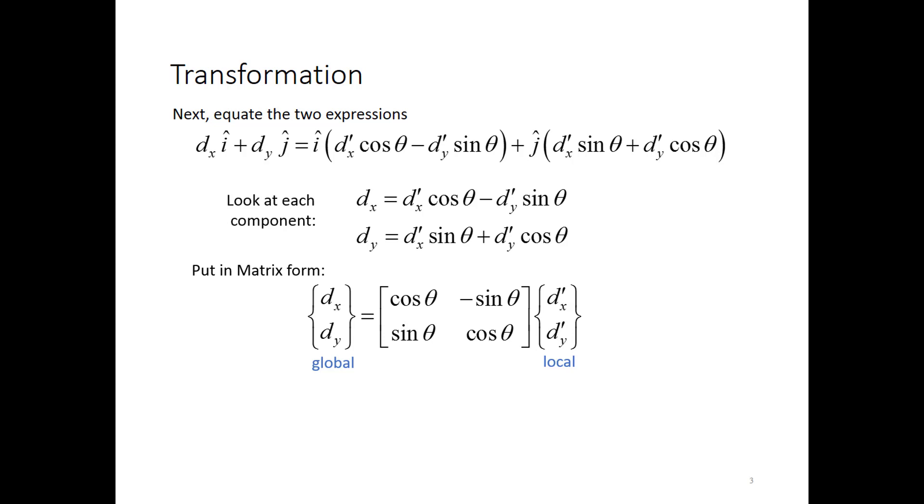We're going to find that it's actually better to go the opposite direction from global back to local, and we'll see why in just a few minutes. But if we invert that matrix, we can get that relationship. So I can define the local degrees of freedom in terms of the global with this transformation matrix. So this is now referring to the degrees of freedom at a single node. So it's not the degree of freedom vector for the full element yet.